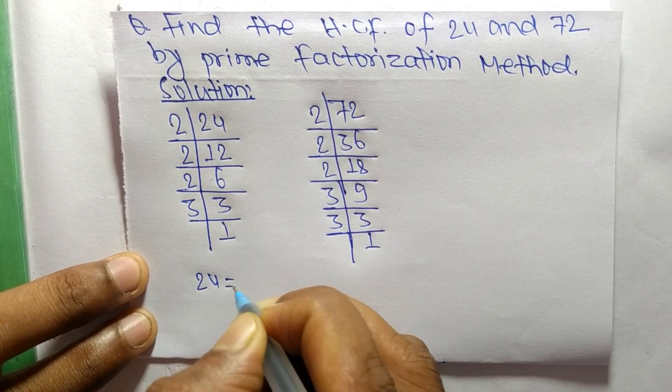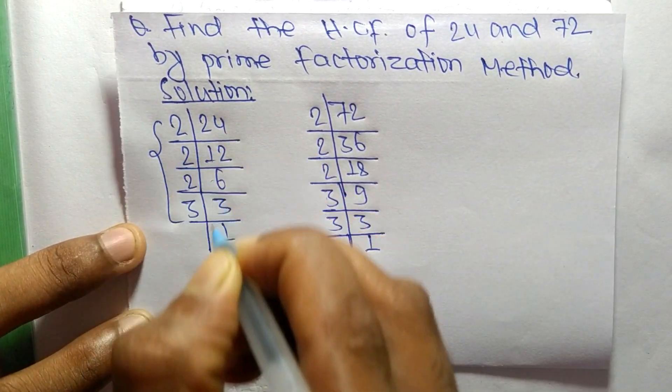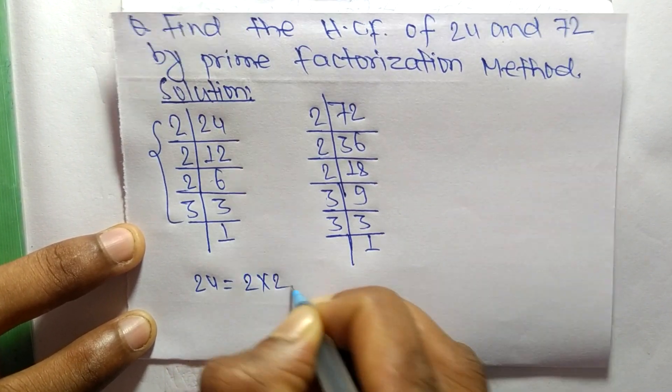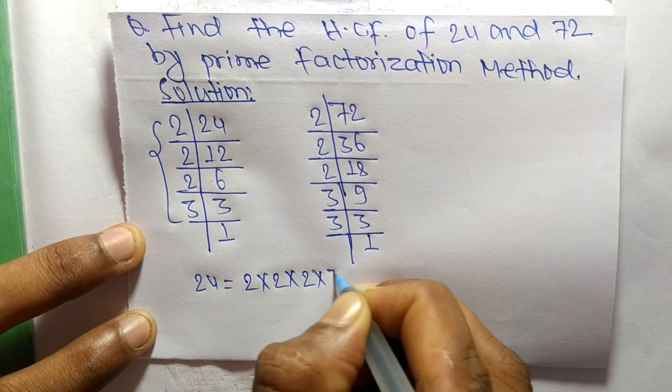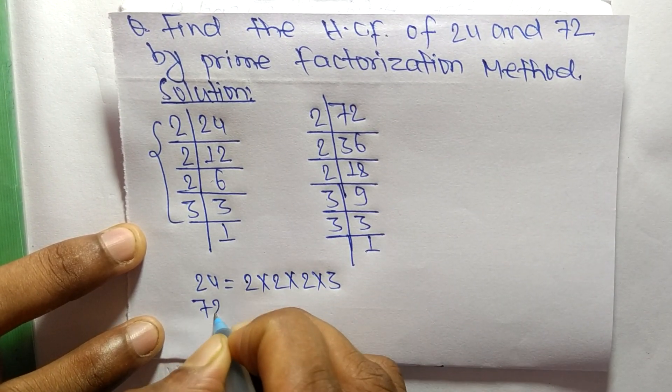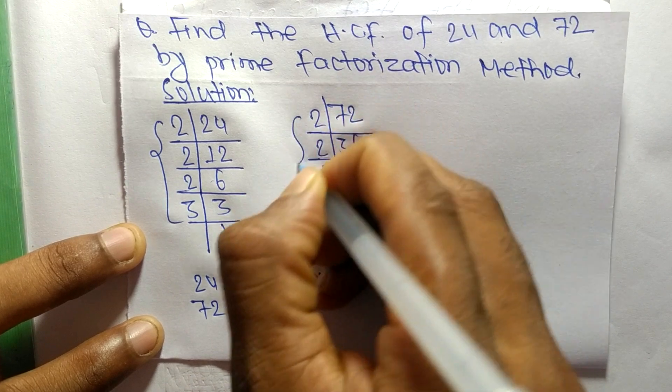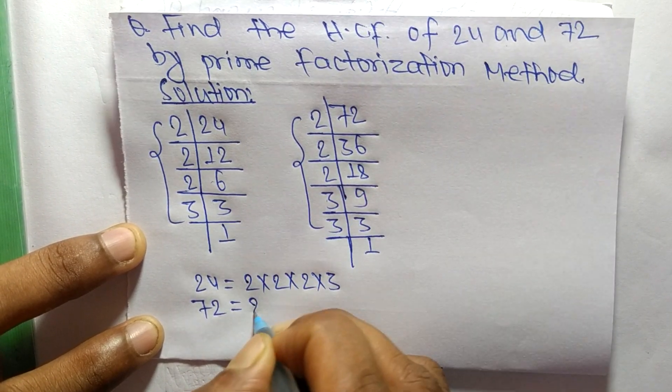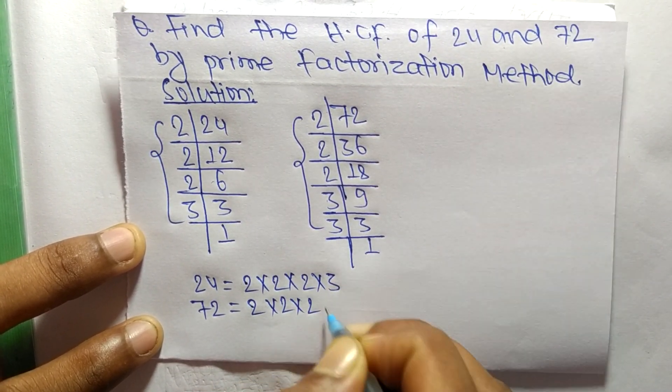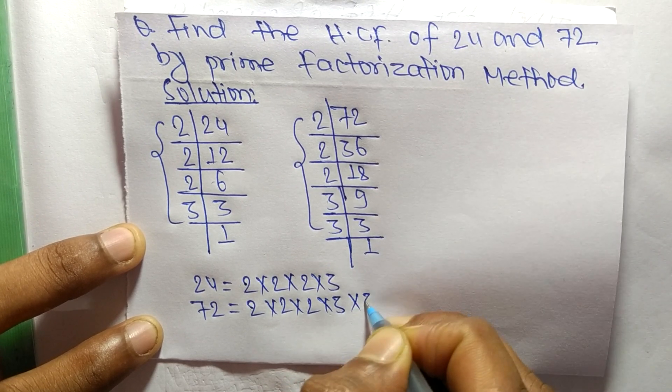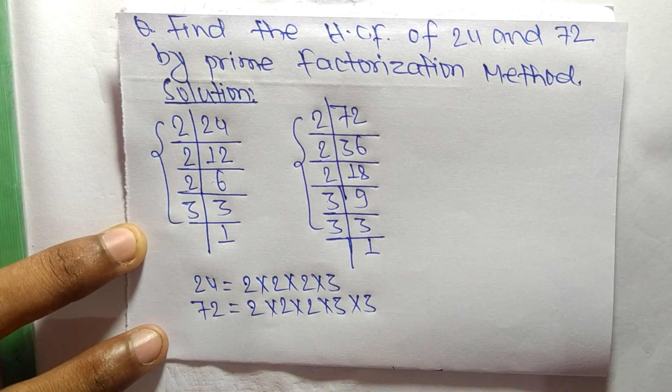From these prime factors, we can write: 24 equals 2 times 2 times 2 times 3. Similarly, 72 equals 2 times 2 times 2 times 3 times 3.